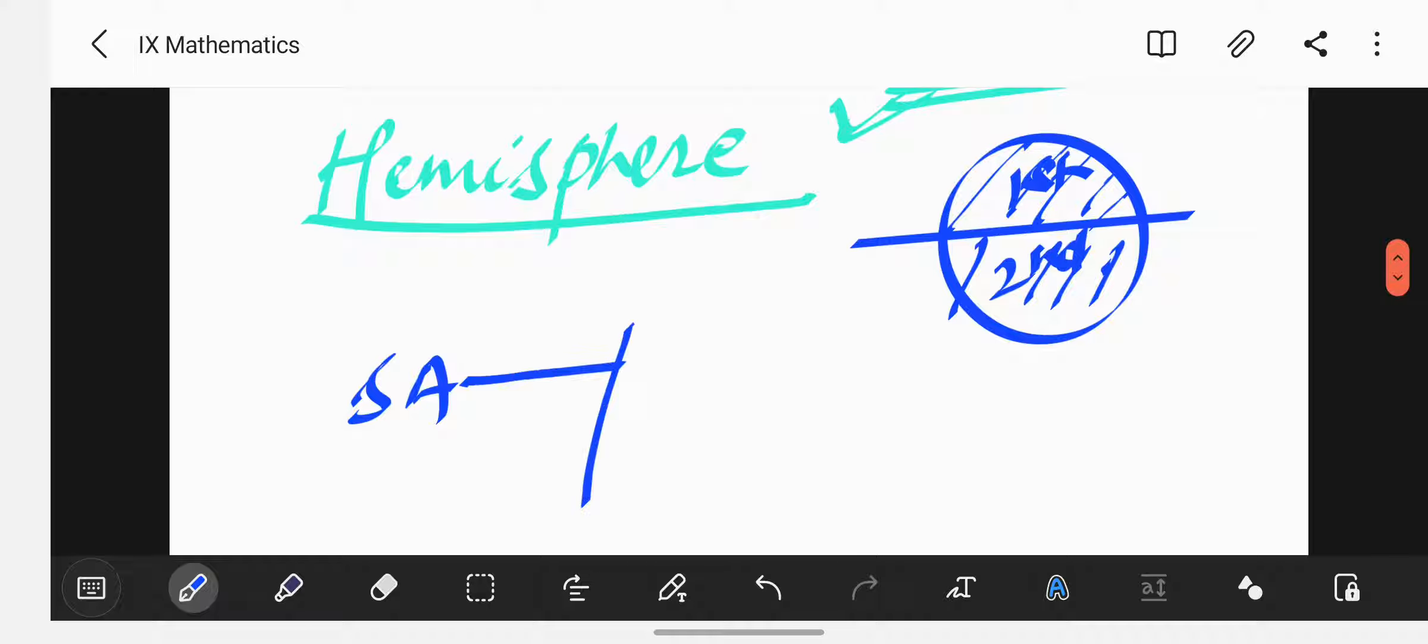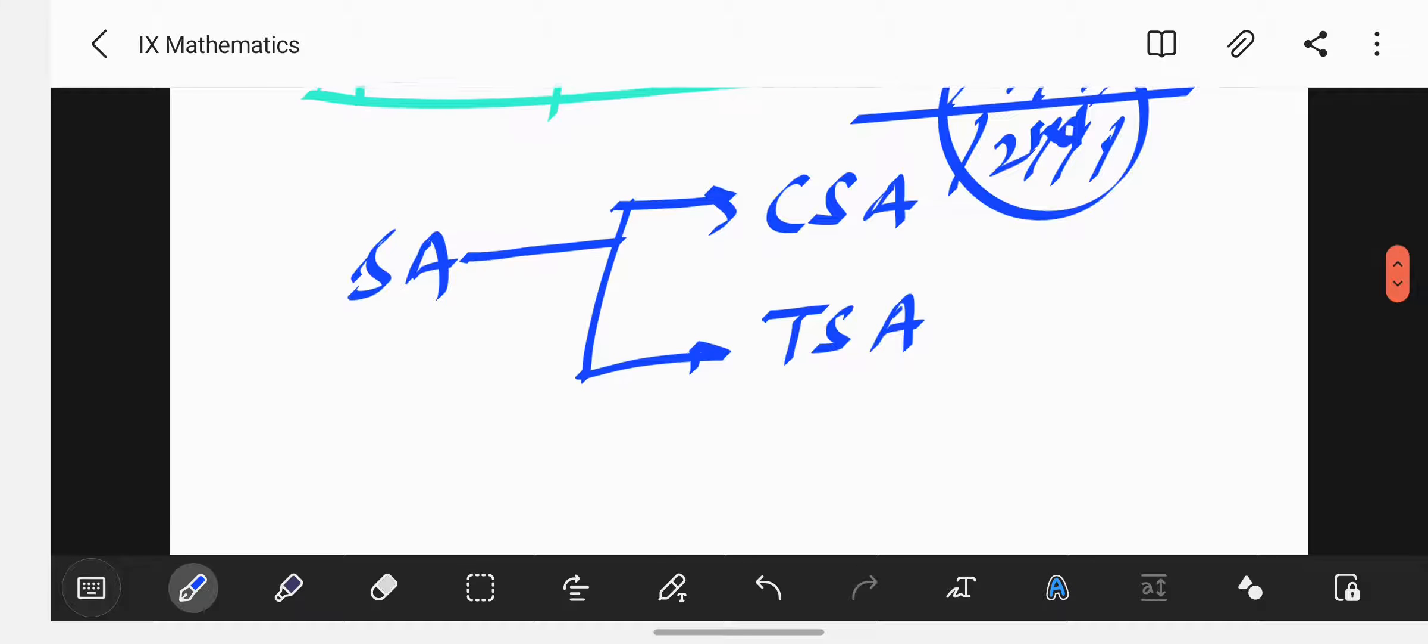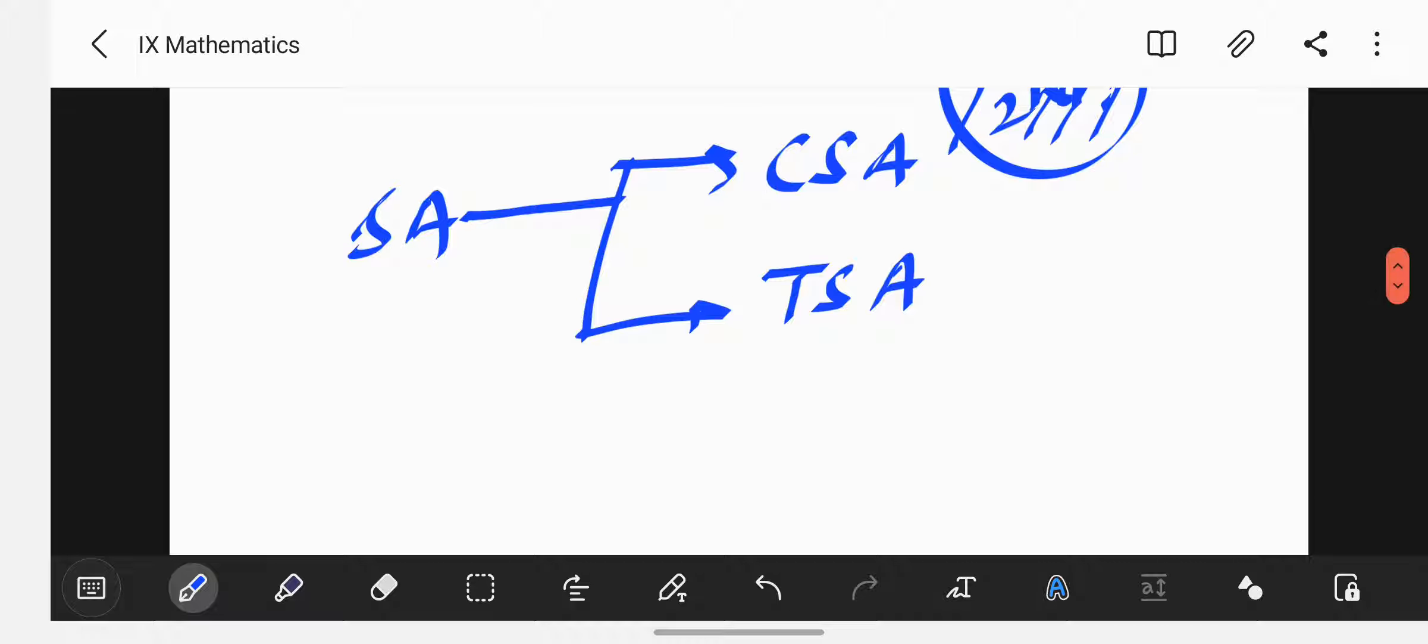Surface area will be into two sections. One is called curved surface area. Another will be total surface area. Because one end will get as a flat surface. The ball which you use in your homes also, you can just imagine that figure and try to understand this one. So, CSA is curved surface area.